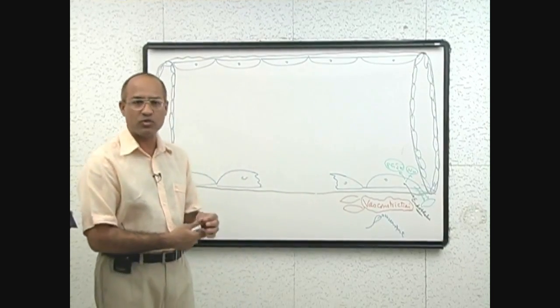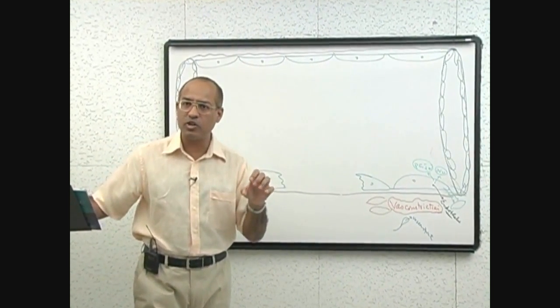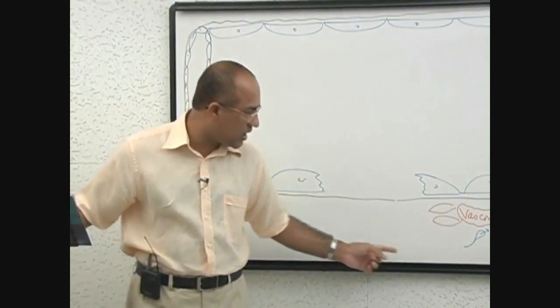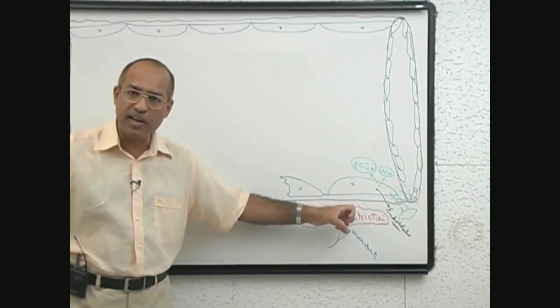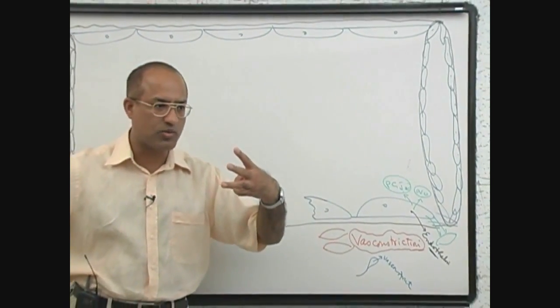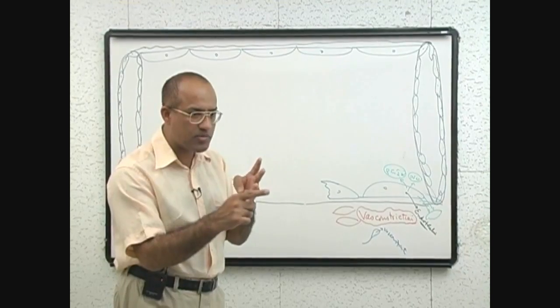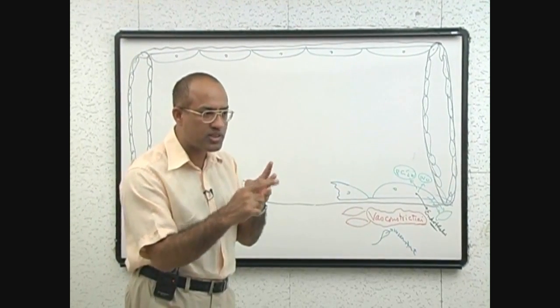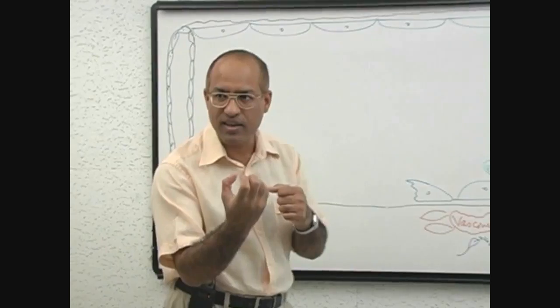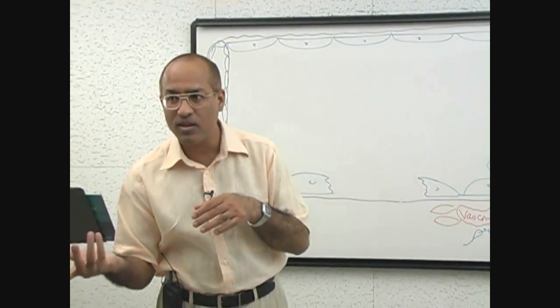So you see that the vascular system is so intelligent that whenever you injure it, it immediately undergoes constriction at the injured point. This constriction is mediated by neuronal mechanisms, myogenic mechanisms, and endothelin release. There are three things which constrict the vessel whenever it's injured, so that blood flow to that area is reduced and chances of blood loss should be less.